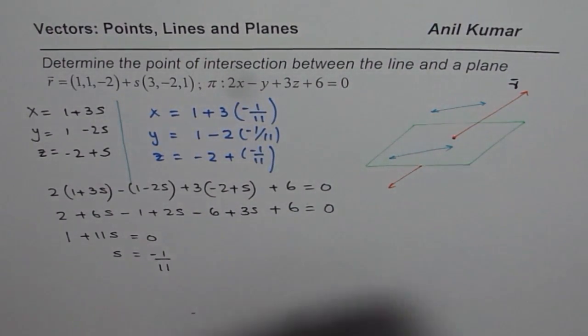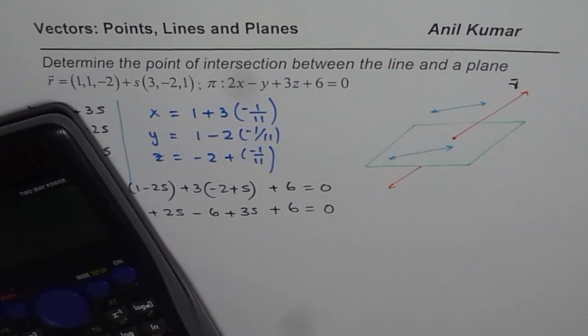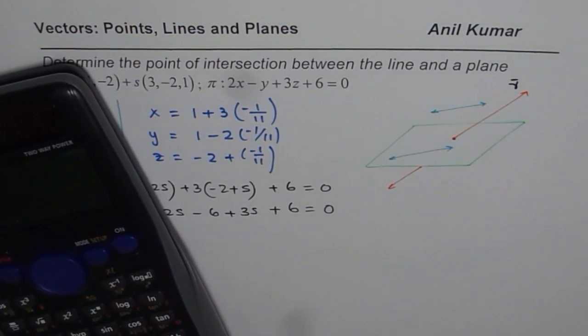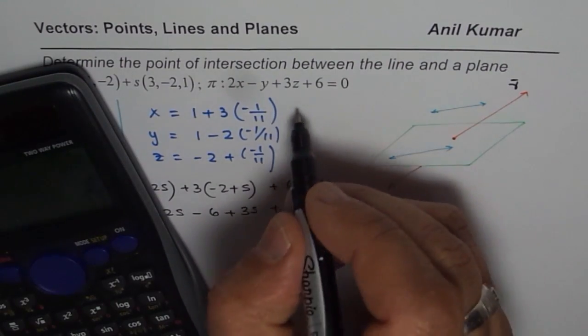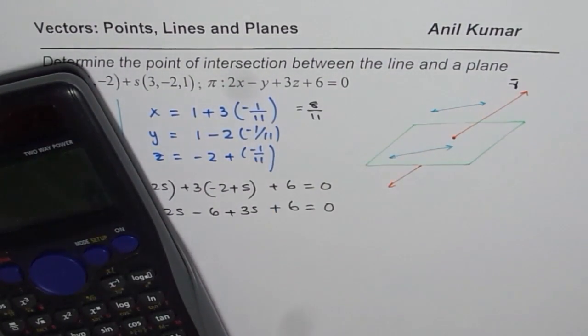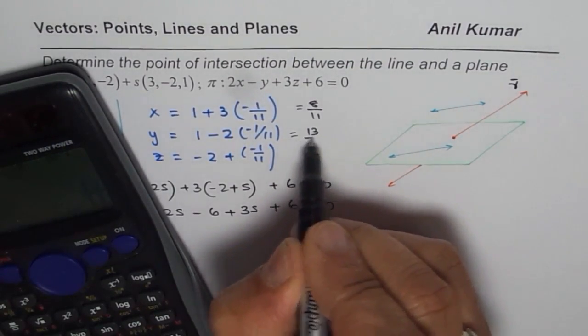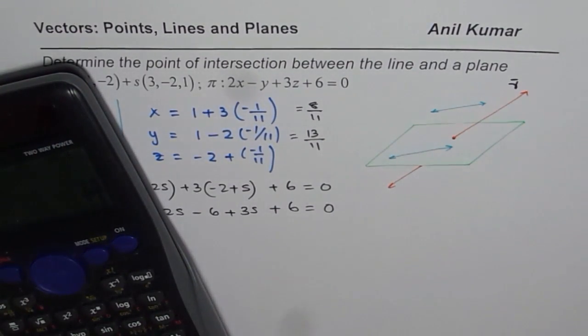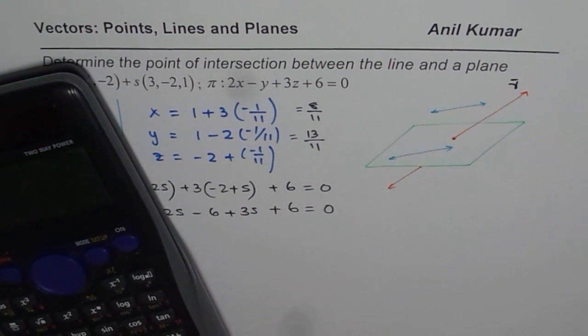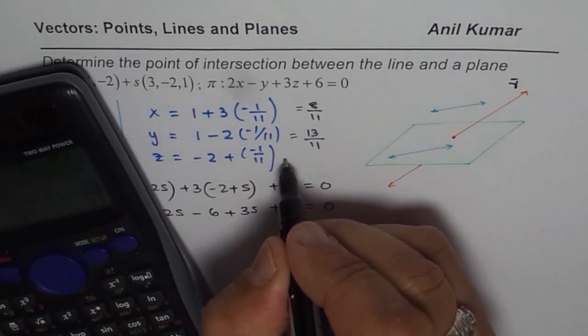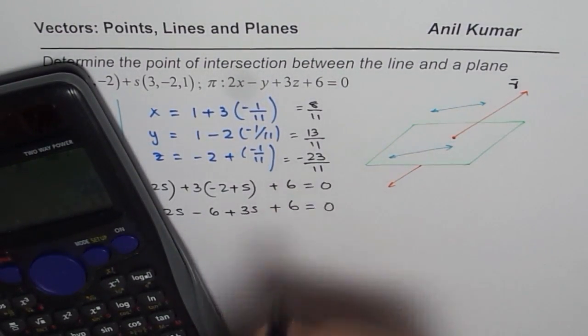So, let us use the calculator. Find the answer. So, we have x as 1 minus 3 divided by 11 equals to 8 over 11. Then we have 1 plus 2 divided by 11, which is 13 over 11. And then we have minus 2 minus 1 divided by 11, which is minus 23 over 11.